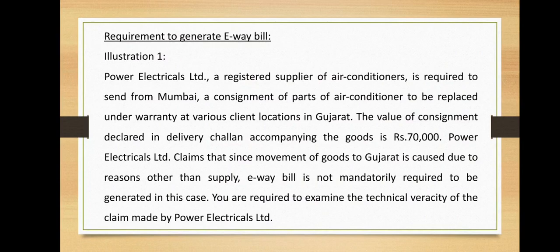The first illustration is related to the requirement to generate the e-way bill. Power Electricals Limited, a registered supplier of air conditioners, is required to send from Mumbai, Maharashtra, a consignment of parts of air conditioners to be replaced under warranty at various client locations in Gujarat. The value of the consignment declared in the delivery challan accompanying the goods is rupees 70,000.